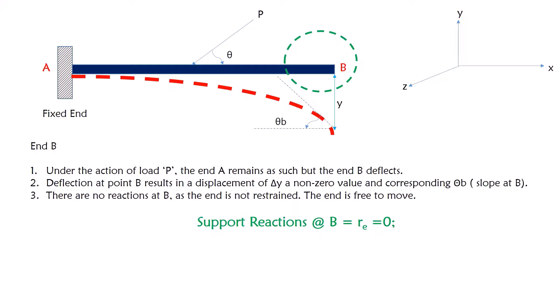Here at point B, there are no sort of reactions as the end is not restrained. The end is free to move, so the support reactions at B is given by zero. This is a simple concept. There is no kind of force or any kind of support that restrains the support B. Thus, there is no restrainment, there is no reaction.